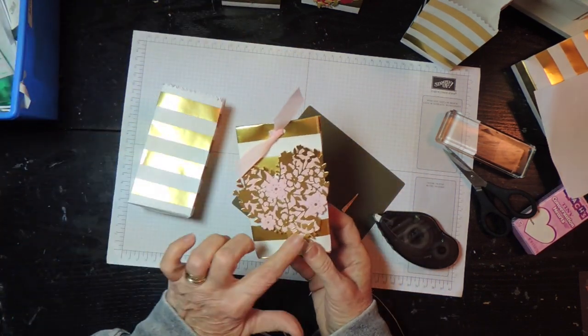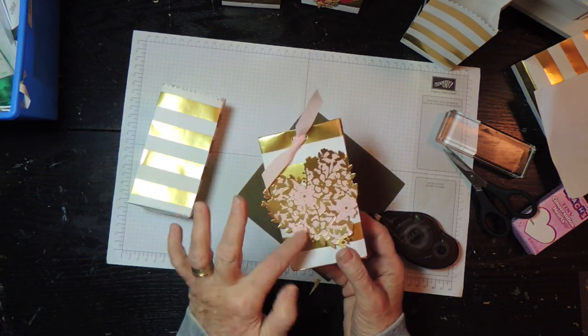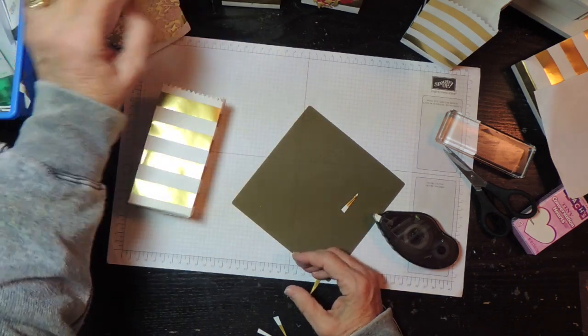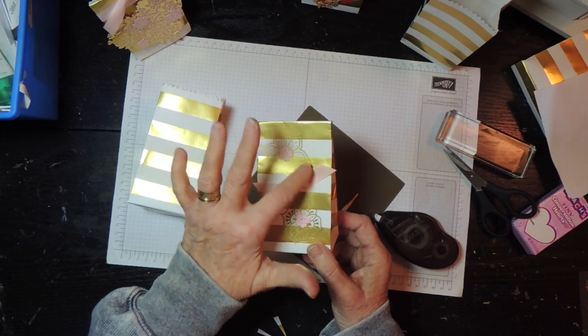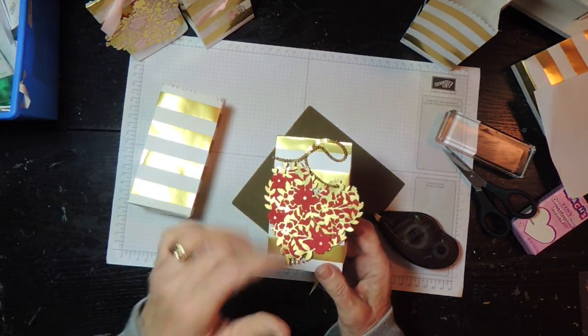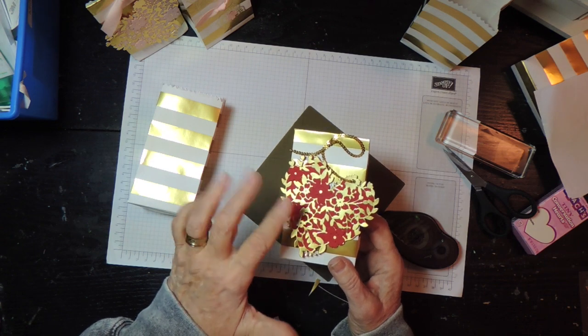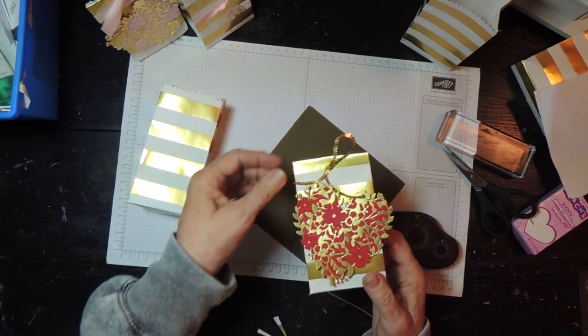You can decorate it however you like. This one I used the Bloominheart Thinlet and some Powder Pink Paper and Powder Pink Ribbon. On this one I used some of the Eastern Gold Foil stickers and some ribbon. And this one I went with the Traditional Red and the Gold Foil for the heart and a little bit of Gold Mini Sequins.